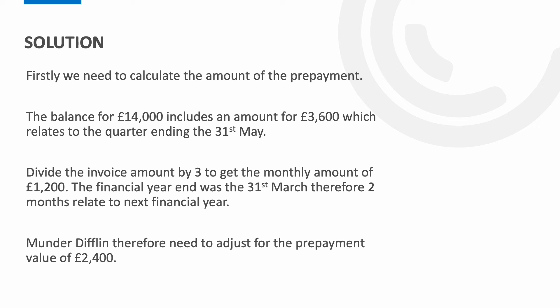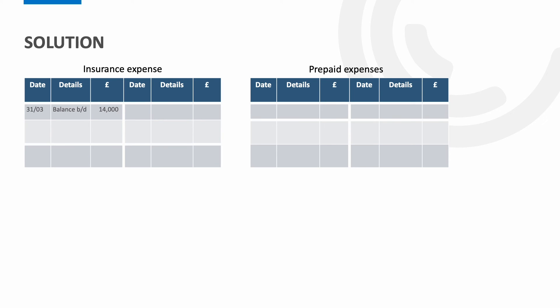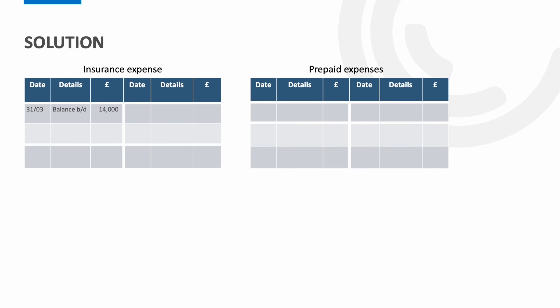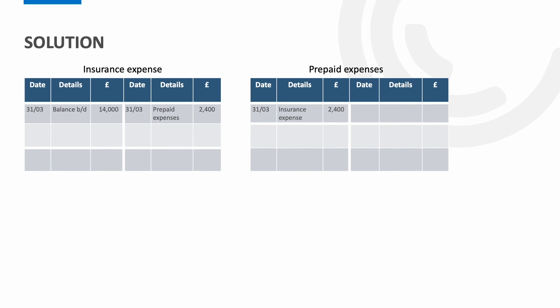Let's now have a look at how we would record this. The insurance account currently has a balance of £14,000 and a nil balance on the prepaid expenses. To record the prepayment we credit the insurance expense for £2,400, decreasing the amount on the expense account, and debit the prepaid expenses, increasing the business's assets. The next step is to close off the account at year end by transferring the balance on the insurance account to the profit or loss. So £14,000 less the prepayment of £2,400 equates to £11,600.